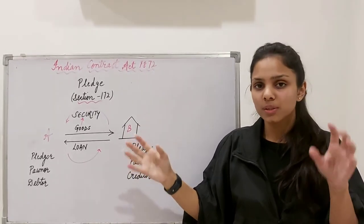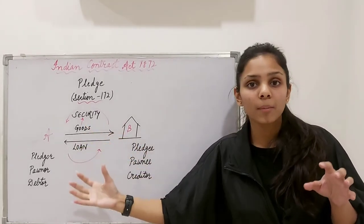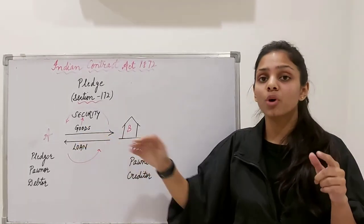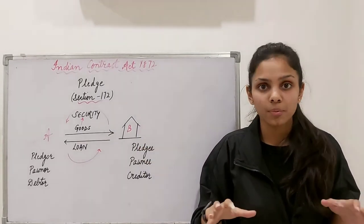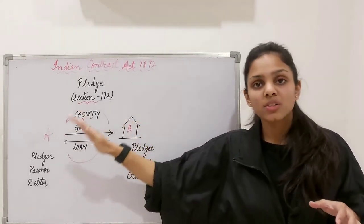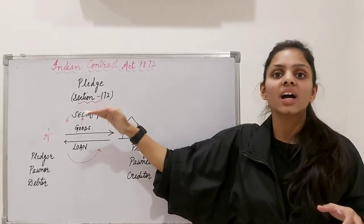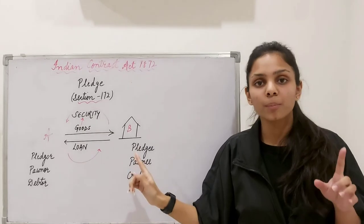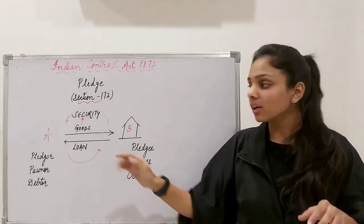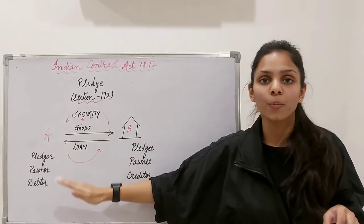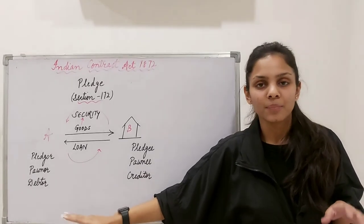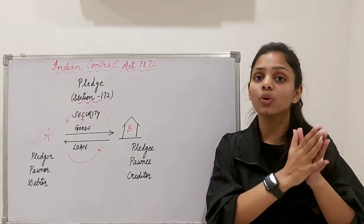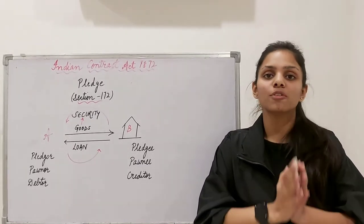If I read the formal legal language, it simply says that pledge is a bailment of goods — goods meaning movable property, which forms the subject matter of Contract of Pledge — bailment of goods from one person to the other, where these goods act as a security. Security for what? Security for repayment of debt or performance of a promise, which has been incurred by this person — the pledger or pawnor — also called debtor.